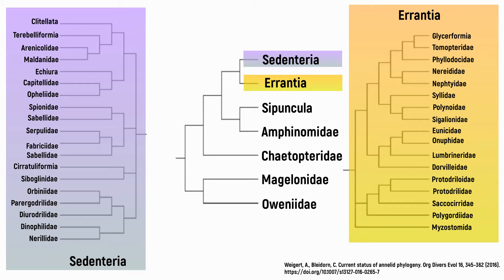The Sedentaria include sessile tube-building species, like the featherworms, but also free-moving species like earthworms and leeches. The Errantia include free-moving and predatory worms, such as bristleworms and bobbetworms.